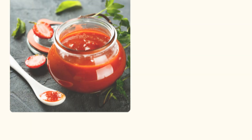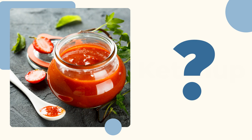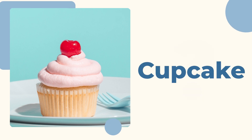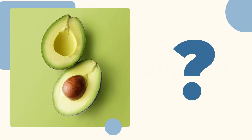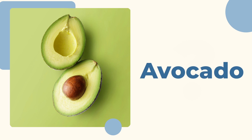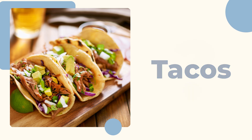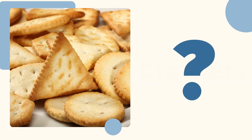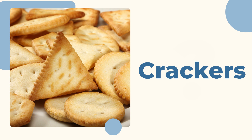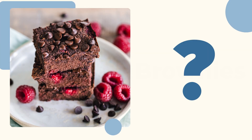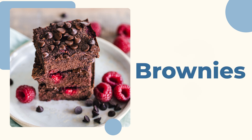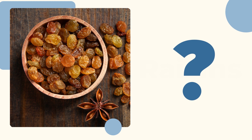Do you know what this is? This is jam. Do you know what this is? This is ketchup. Do you know what this is? This is a cupcake. Do you know what this is? This is an avocado. Do you know what this is? This is oatmeal. Do you know what these are? These are tacos. Do you know what these are? These are crackers. Do you know what these are? These are raisins.